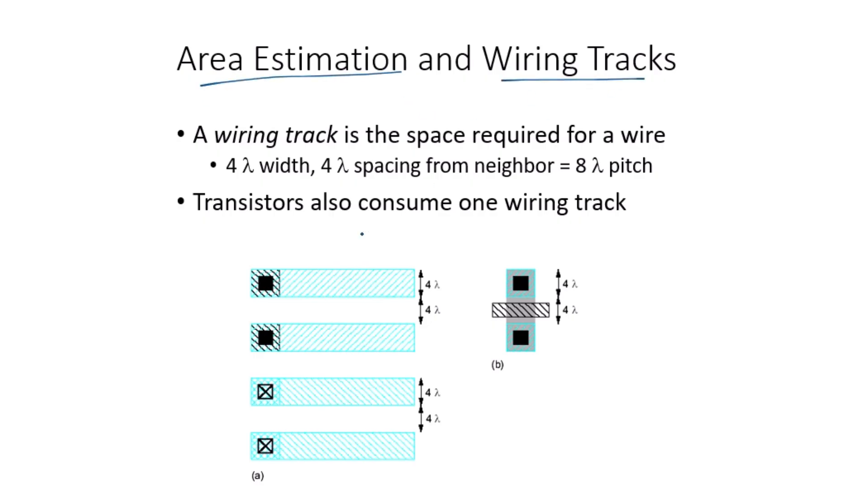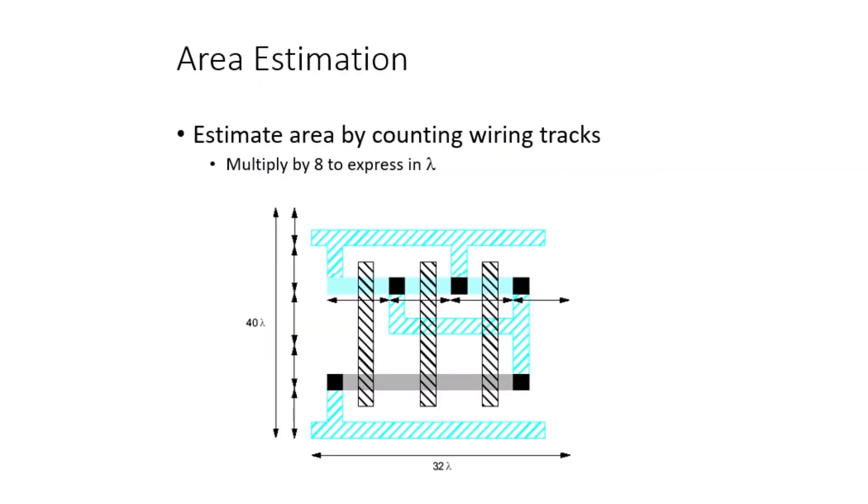When designing layouts, it's also essential to estimate the area. This can be done by counting the wiring tracks. Each wire and transistor consume a wiring track, and you can multiply the number of tracks by 8 lambda to express the total area. A wiring track is a space required for a wire that includes the width and spacing. As you can see, this one takes 4 lambda width and 4 lambda spacing, so that makes a total of 8 lambda pitch. That is why we multiply the whole wiring track number with 8 lambda.